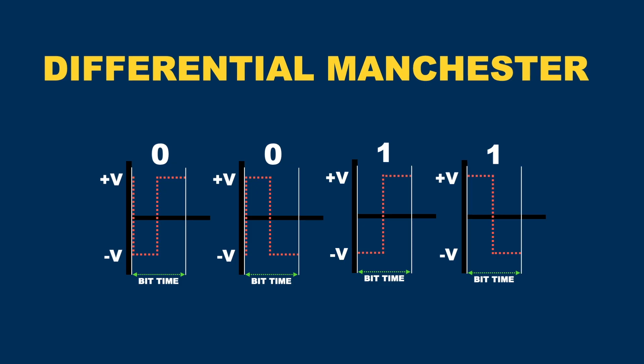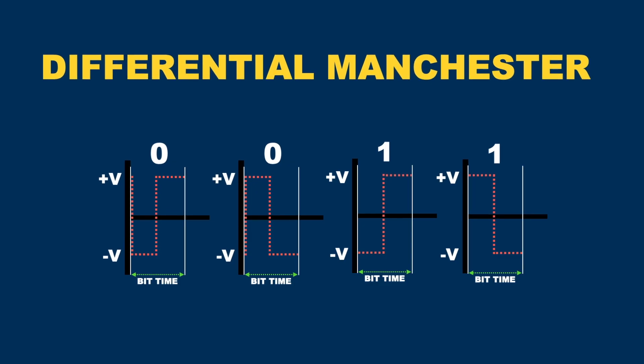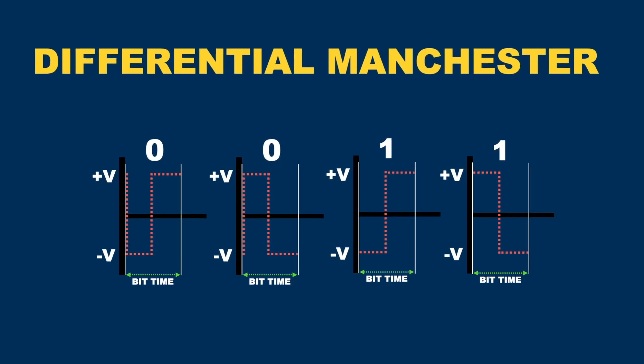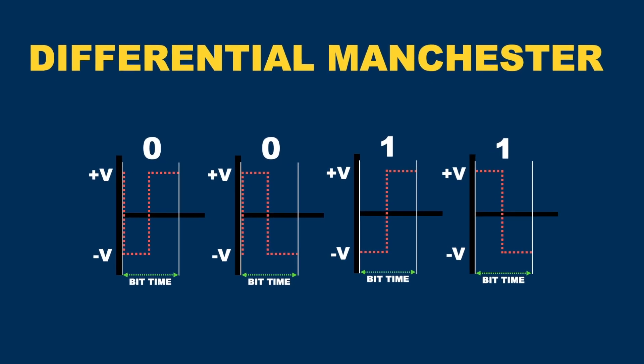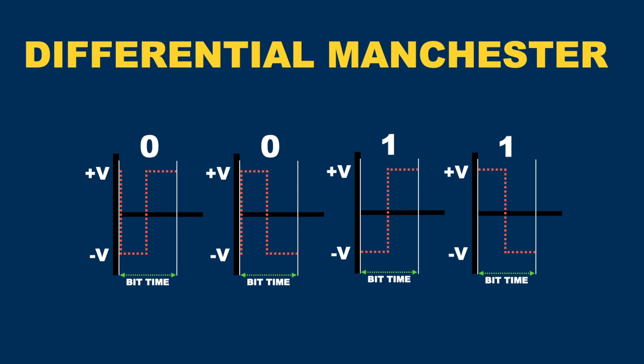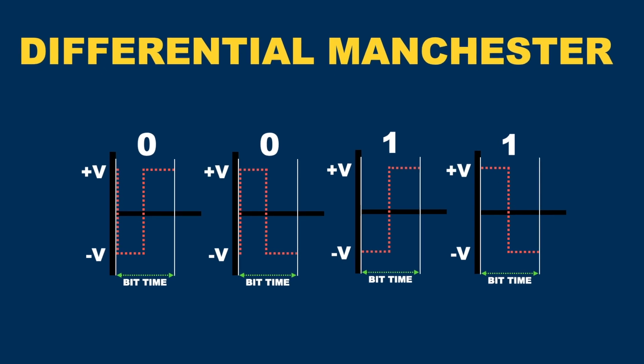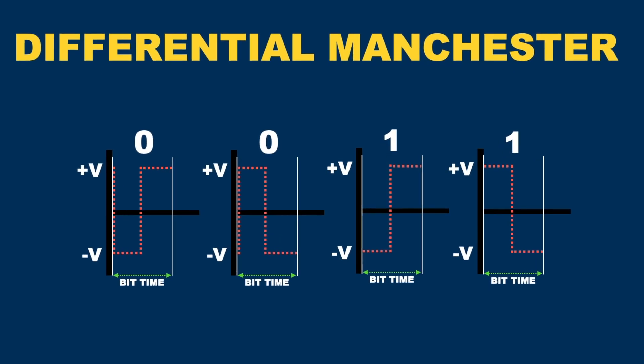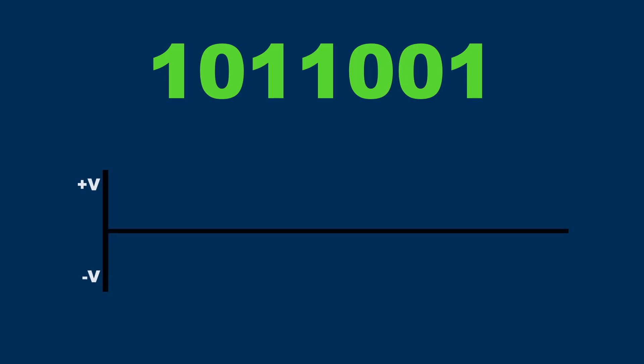So a binary 1 is represented as no transition at the beginning of the bit time, and a binary 0 is represented by a transition at the start of the bit time. For example, this sequence of bits would look like this.